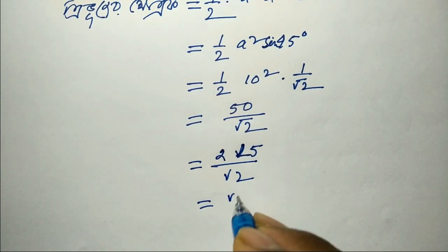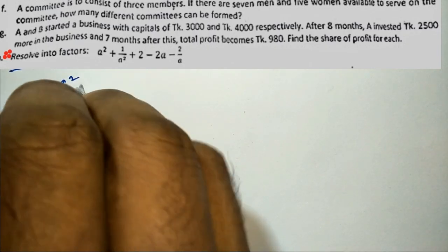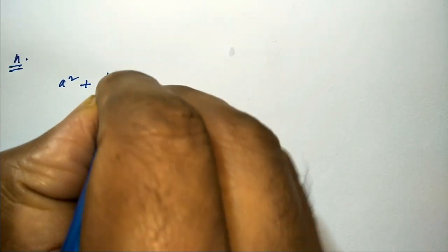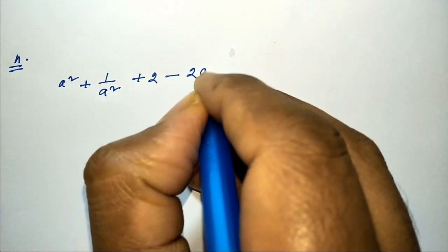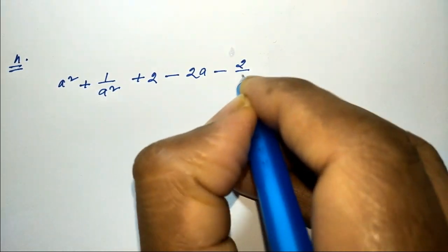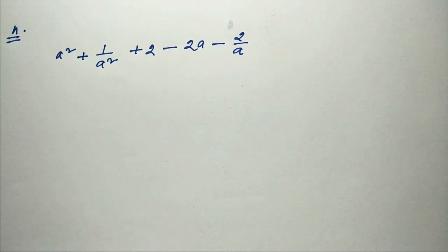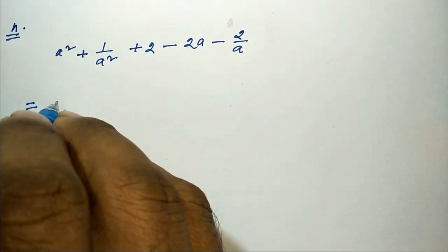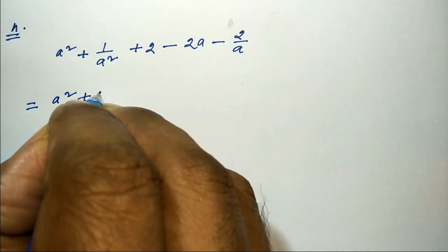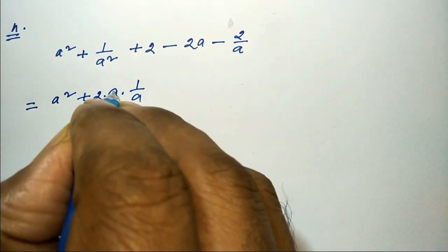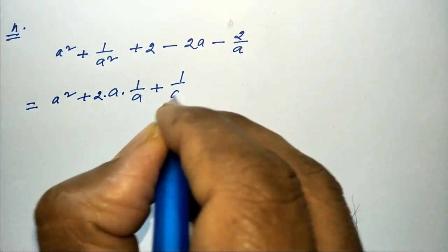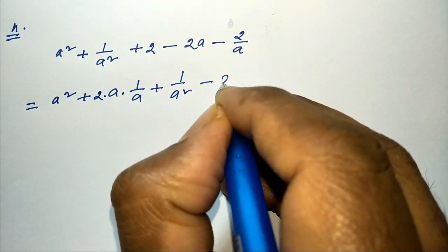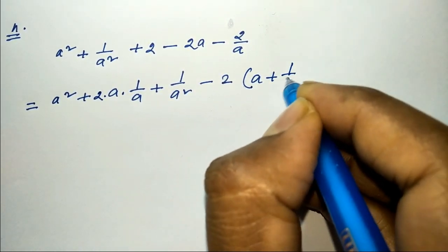Next question: a-squared plus 1 by a-squared plus 2 minus 2a minus 2 by a. Rearranging: a-squared plus 2 times a times 1 by a plus 1 by a-squared, minus a plus 1 by a, then minus a plus 1 by a.